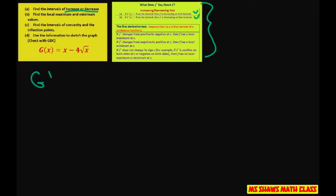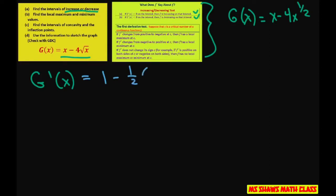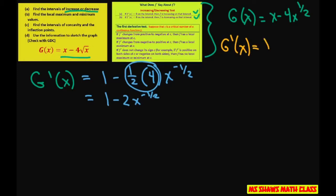So we're going to take g prime of x. Remember this can be written as x minus 4x to the one half, so this is a pretty easy derivative. That's just going to be 1 minus one half times 4 times x to the negative one half, which simplifies to 1 minus 2x to the negative one half, which equals 1 minus 2 divided by the square root of x.